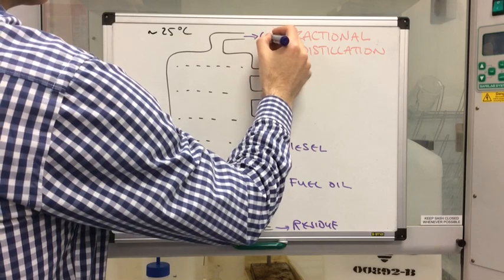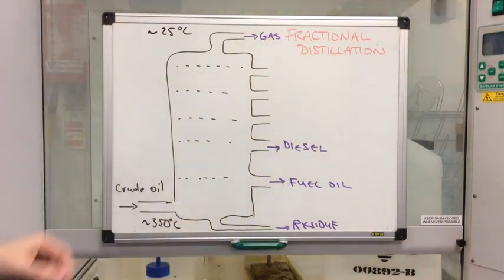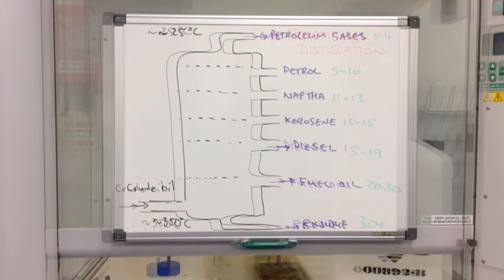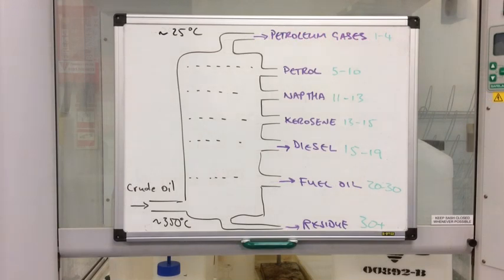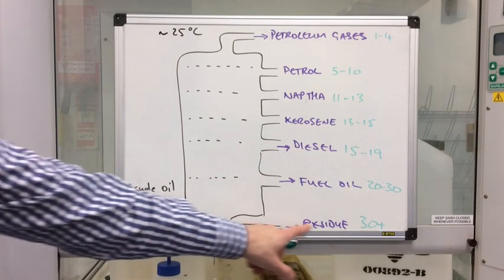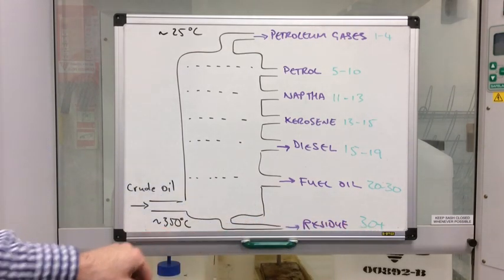And you can see that I've populated the rest of the names of the fractions now, and in green you can see the approximate number of carbon atoms that would be present in each fraction. And you can also see a nice trend there: the longer the carbon chain, the higher the boiling point.